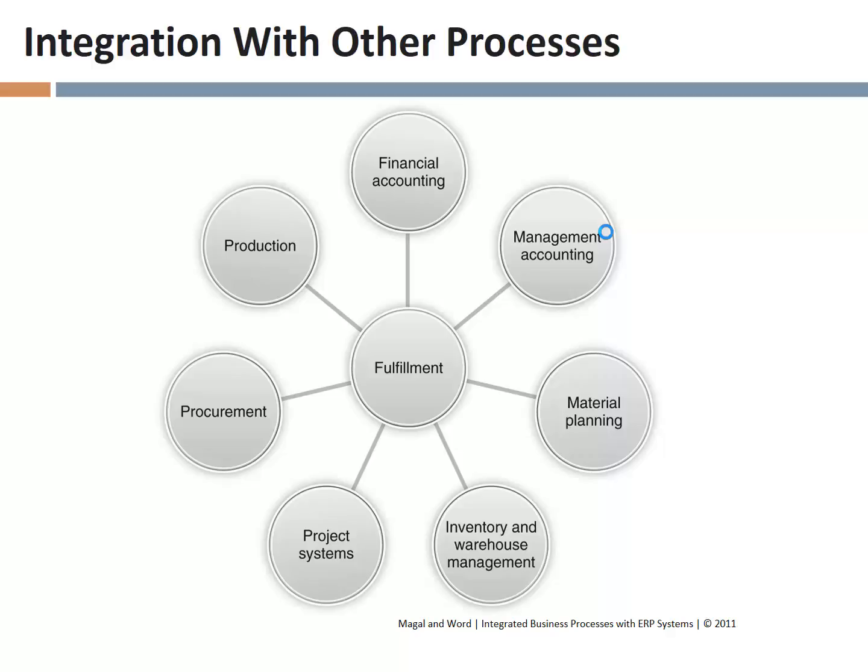Warehouse management. What's the interaction between fulfillment and inventory and warehouse management? Picking and packing — absolutely. And what else? Suppose the materials are in plant A and we need to get them to plant B for shipping. How do we handle that? A stock transfer order. So the interaction between fulfillment and inventory and warehouse management includes picking and packing and transfer orders.